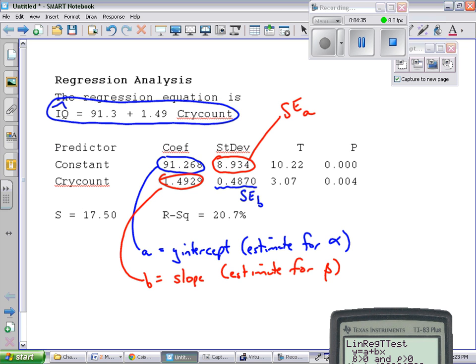What else do you see? 3.07 is my T. So this is my T test statistic. And you remember the T test statistic is given by the formula B over S-E-B. So if I took 1.4929 and divided it by 0.4870, I would get this.